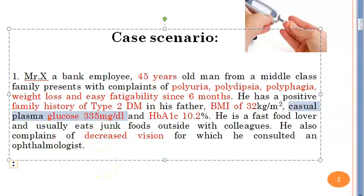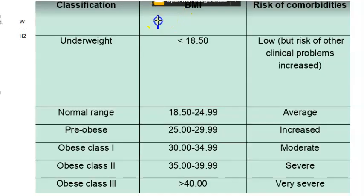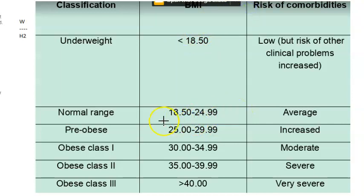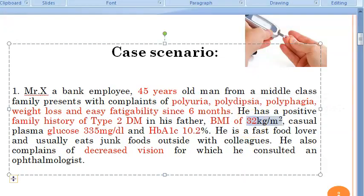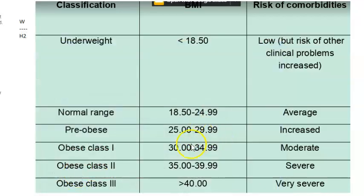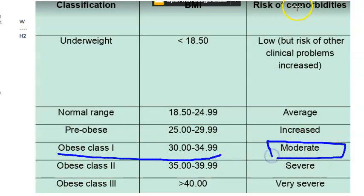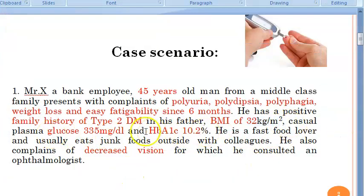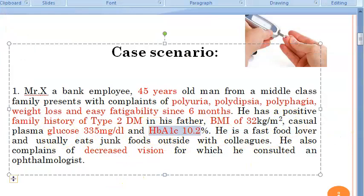Looking at BMI: 18.5 to 25 is normal. This patient's BMI is 32, which falls under Obese Class 1. This means he has a moderate risk for comorbidities.